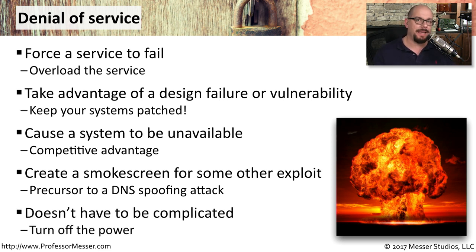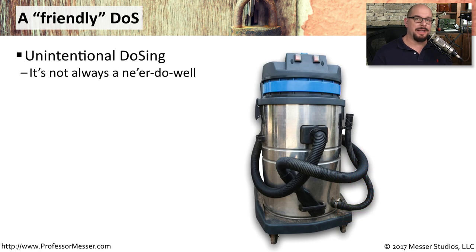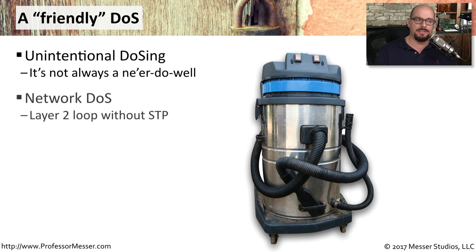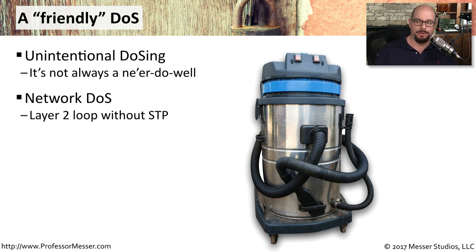This doesn't have to be a complicated method — it could be something as simple as turning off the power to a building, which would certainly cause a denial of service. Sometimes a denial of service isn't something happening maliciously, but it is causing problems for people trying to gain access to that service. One example is a network-based denial of service: if somebody creates a loop and you don't have spanning tree enabled on your switches, nobody can communicate on your network.